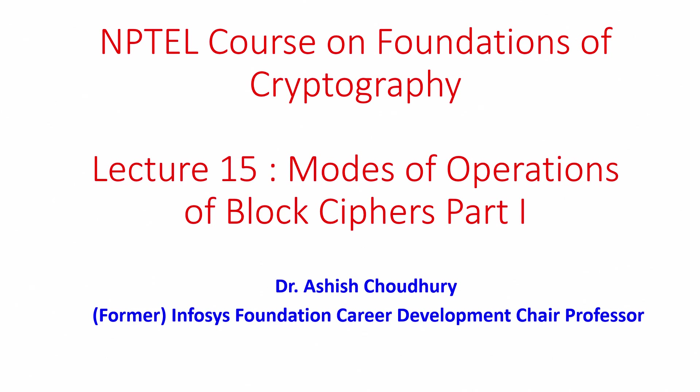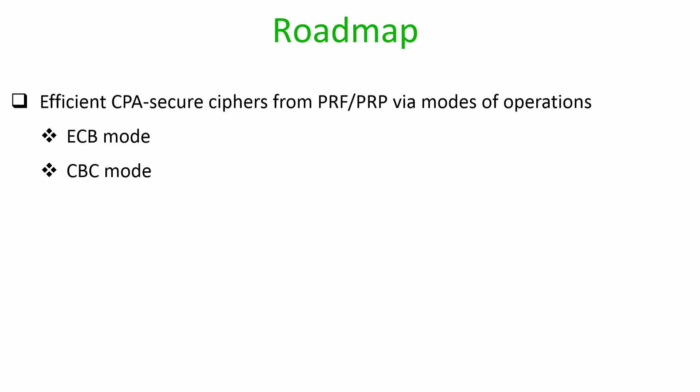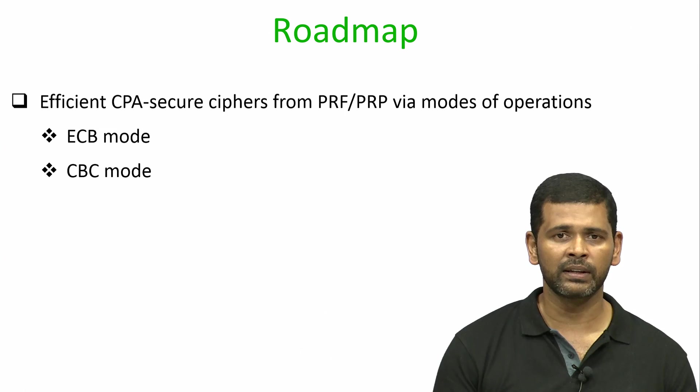Hello everyone. Welcome to lecture 15. This will be the first part of the modes of operations of block ciphers. The roadmap for this lecture is as follows: we will see how to get efficient CPA secure ciphers via two modes of operations, namely the ECB mode and the CBC mode. The remaining modes of operations we will see in the next module.